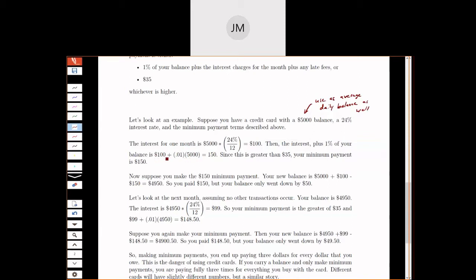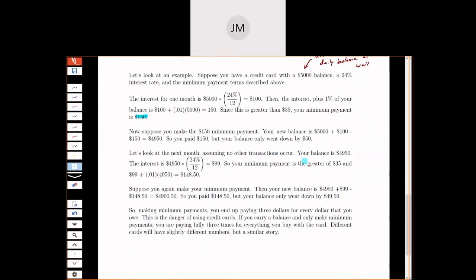Okay, so that's our interest charge, and then we have to add 1% of our balance. So I'm going to take 1% of the $5,000. So we have $100 interest charge plus 1% of our $5,000 gives us $150. And since this is greater than $35, this is our minimum payment. So our minimum payment is going to be this $150. Okay, and let's suppose we make our $150 minimum payment on time. No late fees or anything like that. Okay, so then let's look at our new balance. Our new balance is going to be $5,000 plus $100 in interest minus the $150 that we've made as a payment. So our balance is now at $4,950. Okay, but here's what I want you to pay attention to. We paid $150, but our balance only went down by $50.